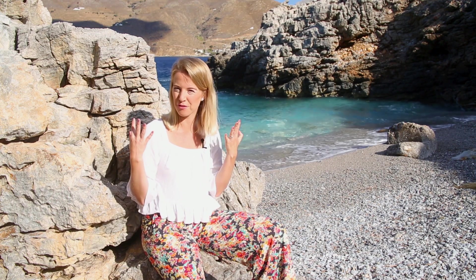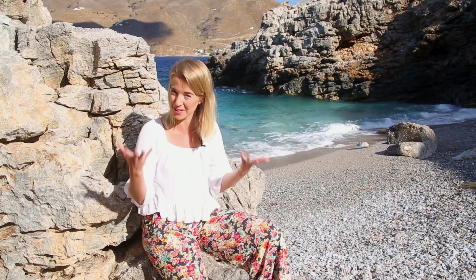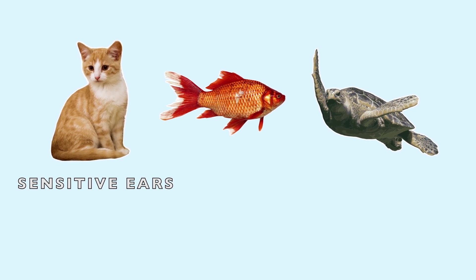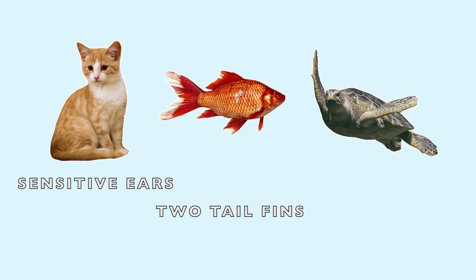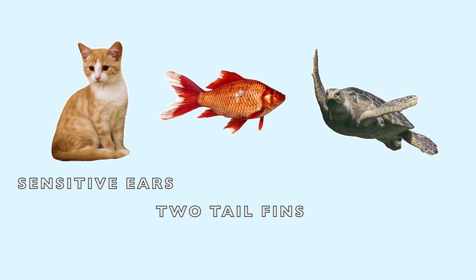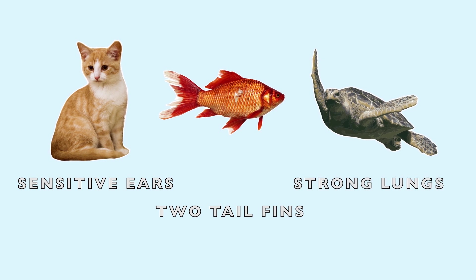You should have the first part of your plan finished. Now for the second part we need to add the information. This is an explanation piece of writing so you need lots of information to explain. For example, the cat has sensitive ears so that it can hear many sounds around it. The fish has two fins on its tail making it able to swim for a long time. The turtle has strong lungs so it can swim underwater for a long time. If you want an example of an explanation piece of writing you can find it in the resources for this mini lesson. Now have lots of fun with this — I am so excited to see what kind of cryptids you guys come up with and your reasons why.